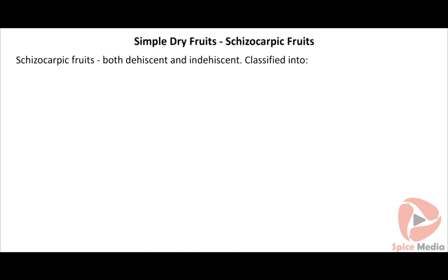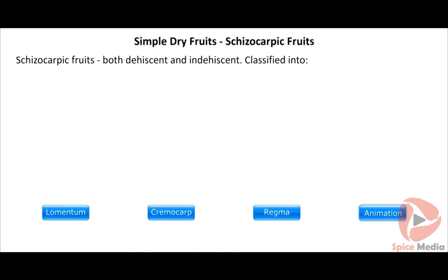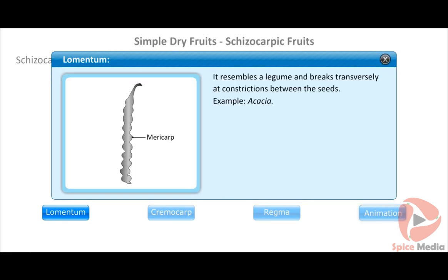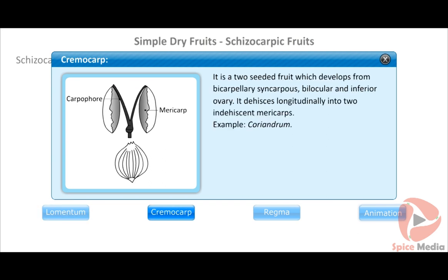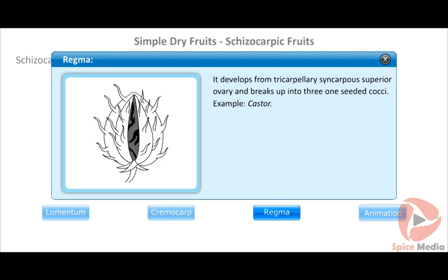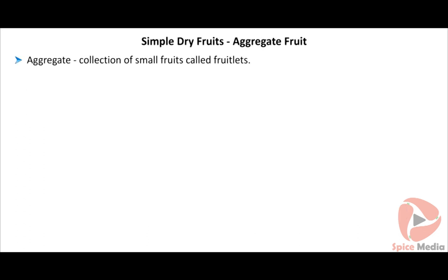Schizocarpic fruits are both dehiscent and indehiscent; at maturity they split into many one-seeded bits called mericarps. They are classified into lomentum, cremocarp, and regma. The lomentum resembles a legume and breaks transversely at constrictions between the seeds. Example: Acacia. The cremocarp is a two-seeded fruit developing from a bicarpellary syncarpous bilocular inferior ovary; it dehisces longitudinally into two indehiscent mericarps. Example: Coriandrum.